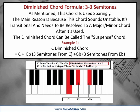Diminished Chord Formula: three three semitones. As mentioned, this chord is used sparingly. The main reason is because this chord sounds unstable. It's transitional and needs to be resolved to a major or minor chord after it's used. The diminished chord can also be called the suspense chord. C diminished chord equals C plus Eb, three semitones from C, plus Gb, three semitones from Eb.